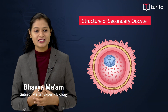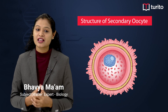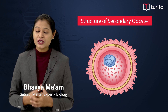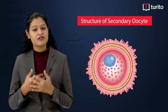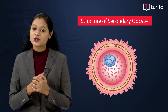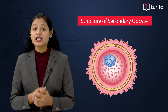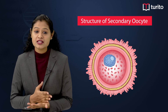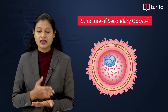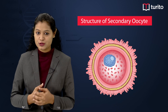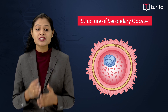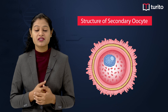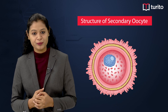Hello students, let's understand the structure of the secondary oocyte. During ovulation, the Graafian follicle ruptures to release the secondary oocyte, which is arrested at meiosis 2 division in the metaphase 2 stage. This division is completed only when there is fertilization by a sperm.